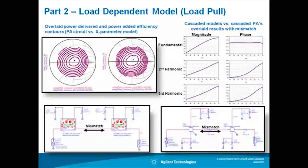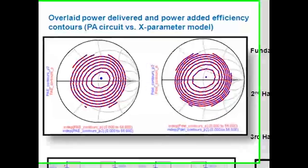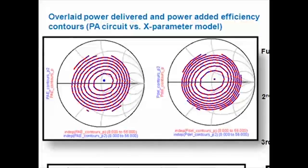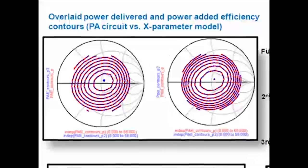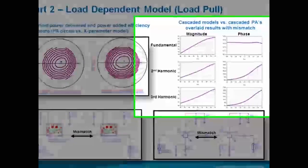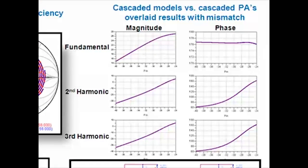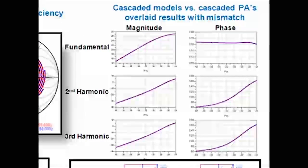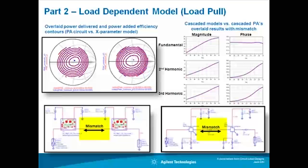In video two I expanded the model generation process and produced a more versatile load dependent model that was very accurate with any load impedance on the Smith chart. The load dependent model was then used to accurately characterize the cascaded effect of non 50 ohm mismatched modules with faster simulation speed.